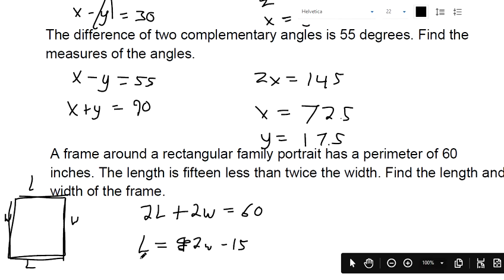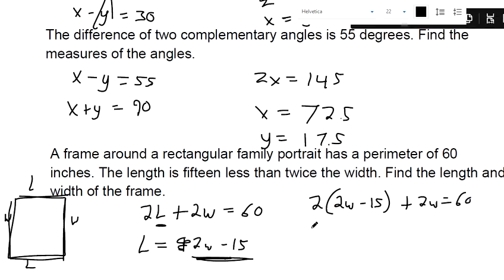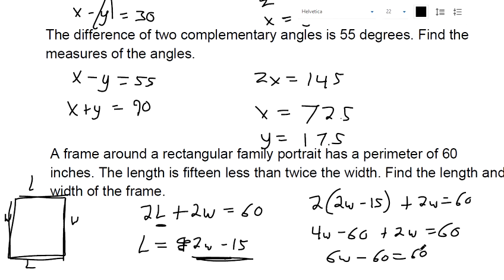This one's set up for substitution. It's supposed to plug 2w minus 15 in for L. So two parentheses, 2w minus 15, that's in for L, plus 2w equals 60. And then we've got to do the distributive property. Multiply that 2 to everything. And then on the left side, we've already got w's. So the 4w plus the 2w makes 6w. Add 60 to both sides, so we get 6w equals 120. And then divide both sides by 6 to get w equals 20.